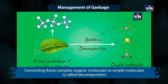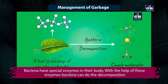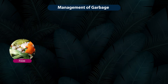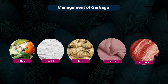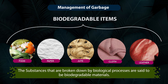What is decomposition? The bodies of living things are made up of complex organic molecules. Converting these complex organic molecules into simple molecules is called decomposition. Bacteria have special enzymes in their body; with the help of these enzymes, bacteria can do decomposition. So bacteria can decompose the wastes and dead remains of plants and animals. They can also decompose things made with plant or animal ingredients like food, paper, natural fiber cloths, and leather. This kind of substance is called biodegradable material — the substances that are broken down by biological processes are said to be biodegradable materials.